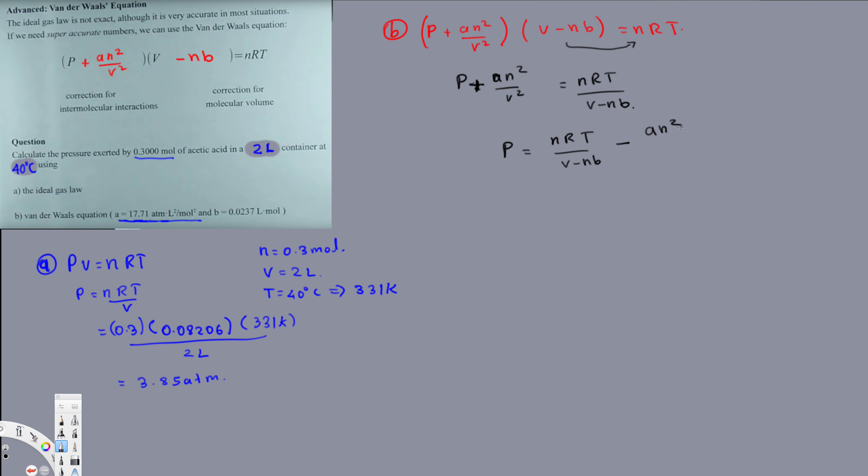Now we can plug all the values and see what's the pressure we get. n is 0.3 mole, multiplied by the same R value, that is 0.08206, and then multiply by T, that is 313, divided by volume, that is 2, minus mole, that is 0.3.